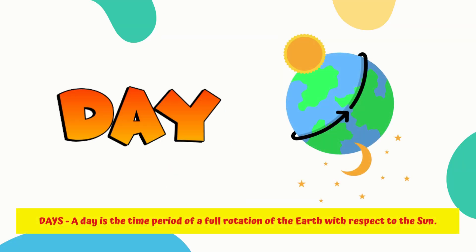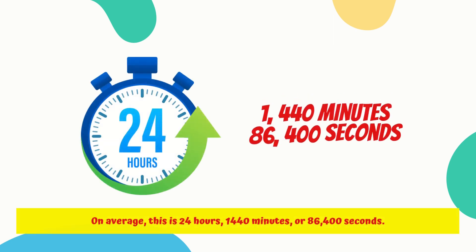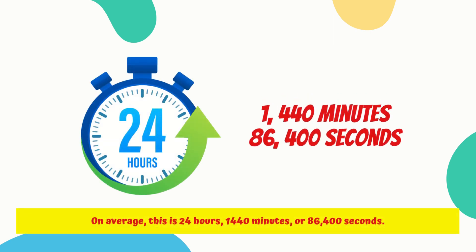A day is the time period of a full rotation of the Earth with respect to the Sun. On average, this is 24 hours, 1,440 minutes, or 86,400 seconds.